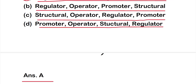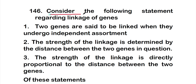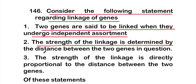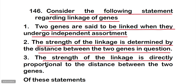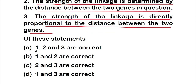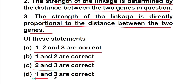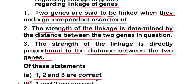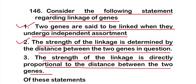Question 146: Consider the following statements regarding linkage of genes — (1) two genes are said to be linked when they undergo independent assortment; (2) the strength of linkage is determined by the distance between the two genes; (3) the strength of linkage is directly proportional to the distance between the two genes. Options: A — 1, 2, and 3; B — 1 and 2; C — 2 and 3; D — 1 and 3. The correct answer is option B — statements 1 and 2 are correct.